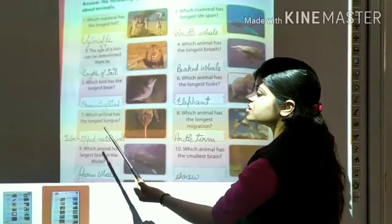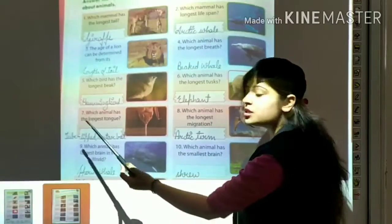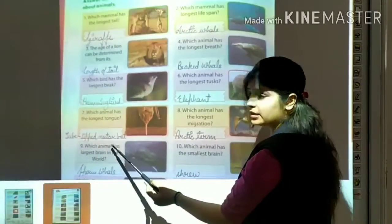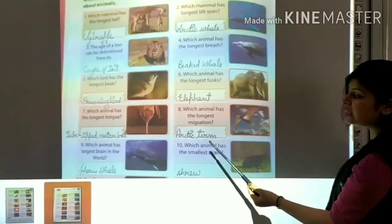Which animal has the longest tongue? It's tube-lipped nectar bat. Which animal has the longest migration? It's Arctic tern.